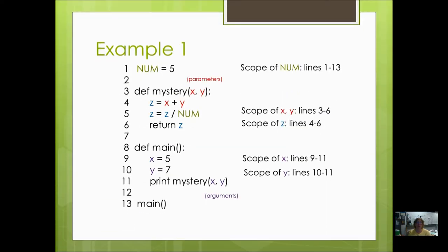Let's take a look at some examples. Here we have a global constant, and we've got a return function, that's a helper function, and we've got a main void function. Where is NUM available? Who can access NUM? Pretty much anywhere from line 1 all the way to line 13, anywhere in this program you can access NUM. It does not need to be passed in as a parameter or used as an argument, it can just be used. So the scope of NUM is lines 1 through 13.